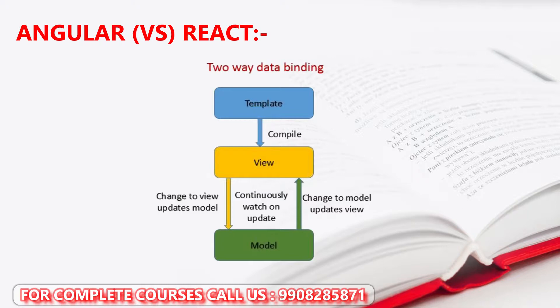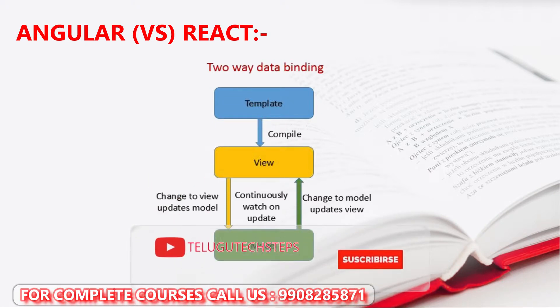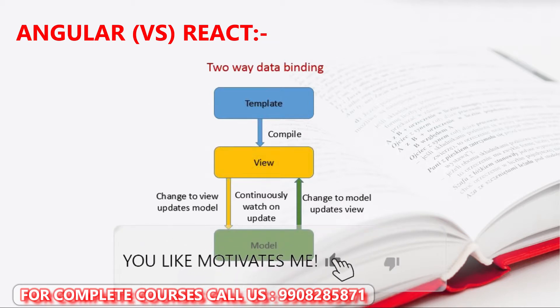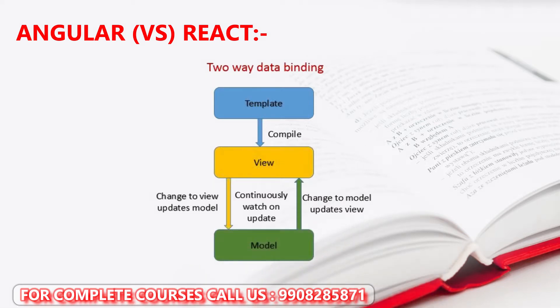Coming to one-way data binding, it will be vice versa. If I make any changes in the component, it will be reflected in the view. The model reflects the value of the component into the view. So this is called two-way data binding.